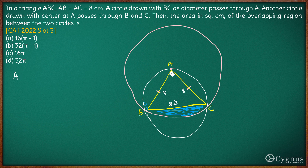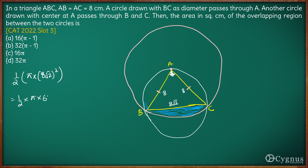The area of the semicircle is half the area of the full circle. The radius is 4√2, so the area of the full circle is π × (4√2)² = π × 32. Half of that gives us 16π. So the area of the top semicircle part is 16π.